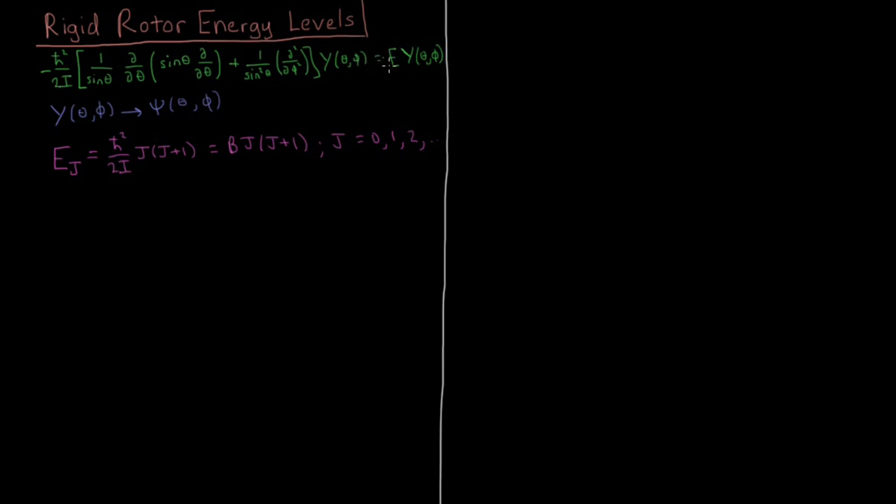That equals the energy times the same function back, that's the standard eigenvalue problem, which is the Schrödinger equation. And I have this written with these y of theta phi, which is just the wave function. It's sometimes written in that form because, as we'll see later, these wave functions end up being very special functions called the spherical harmonics.